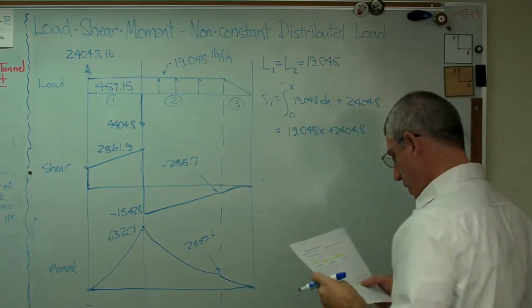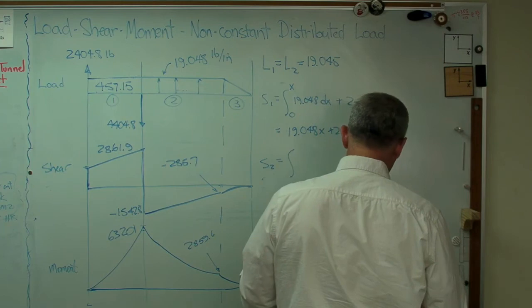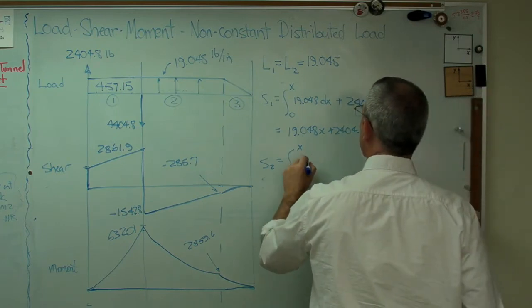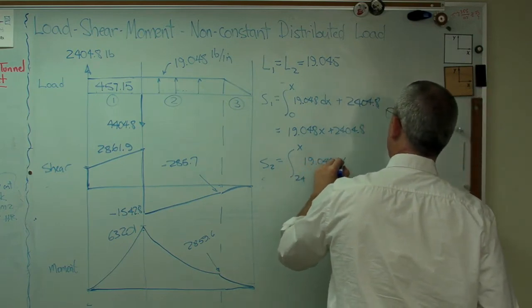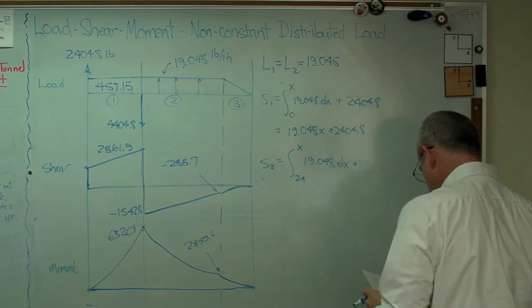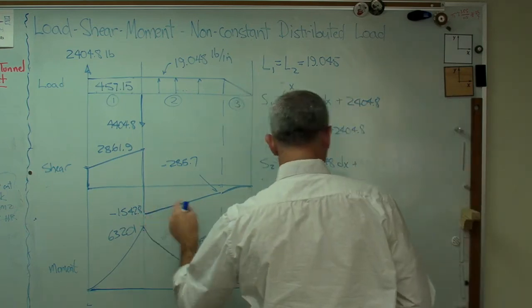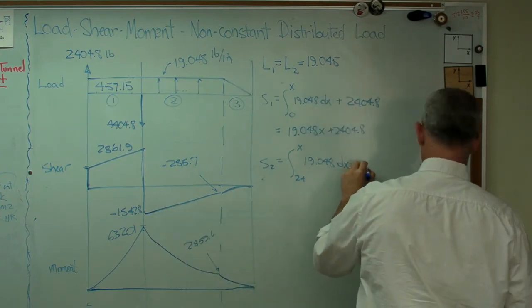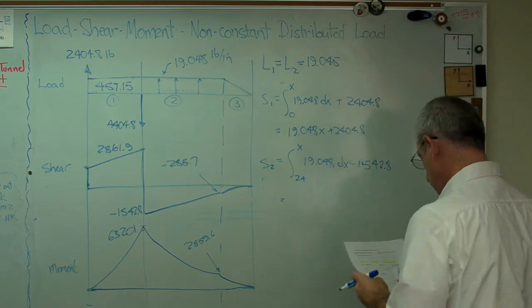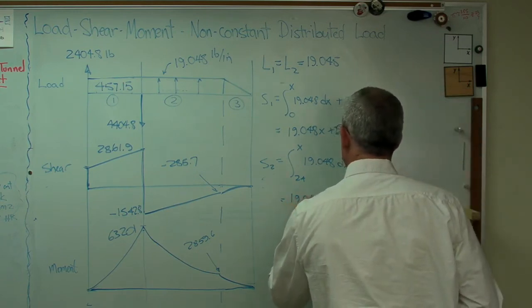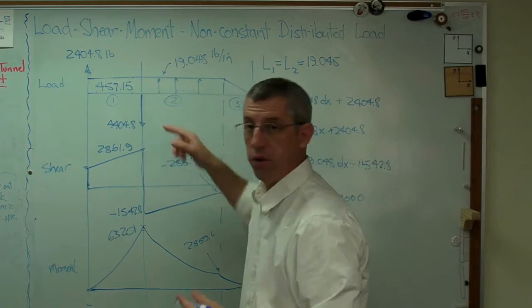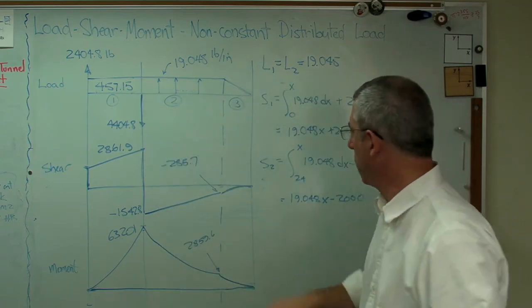For S2, okay, now I've got the integral from 24 to x. I've got to make sure I have the right integration limits here. x plus, now I have to have a new end point right there, a new offset at the end. And that's going to be minus 1542.8. Integrate this out. Again, just do what the math tells you to do. You'll get the right answer. And you get 19.048x minus 2,000. That's no surprise. The area there is 2,000, so it shouldn't be too surprised if a 2,000 shows up somewhere. And there you have it.